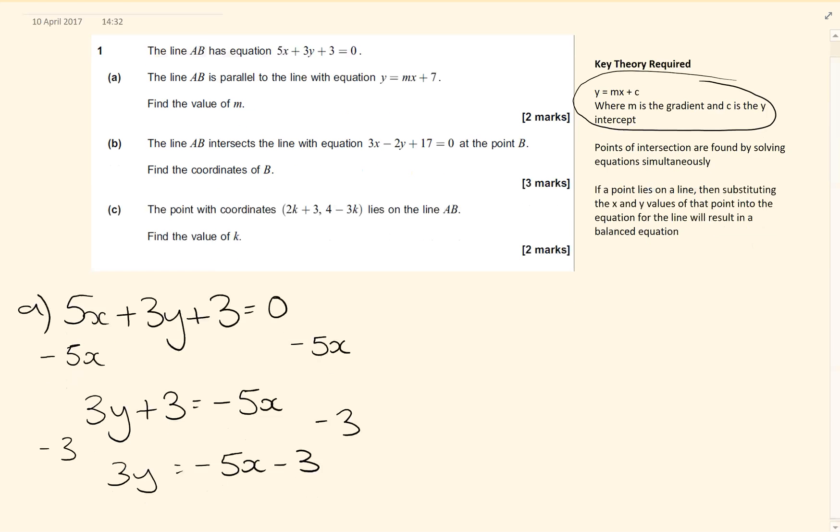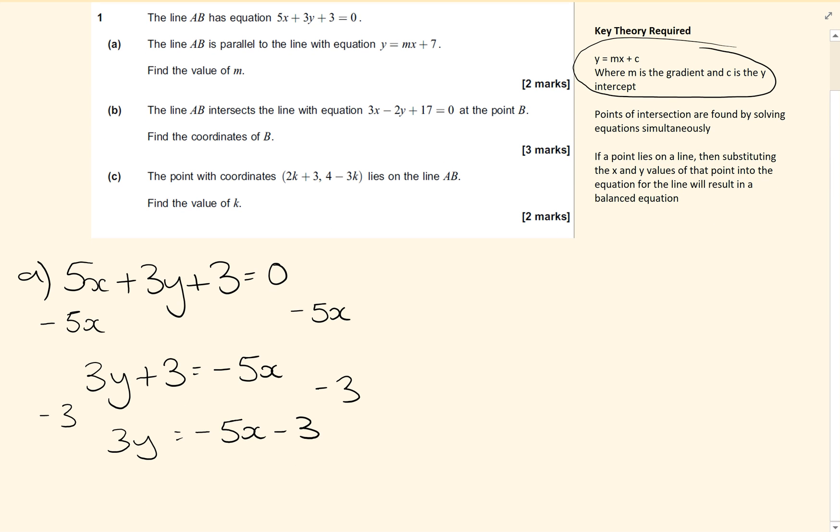Now students that dropped marks in this question tended to then write down that the gradient was minus 5, which is not true because for this theory to be correct, we cannot have the 3 in front of the y.